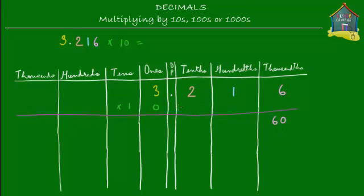Then 1 hundredth times 10 is 10 hundredths, so we put that in the hundredths column. Then 2 tenths times 10 is 20 tenths, so we put that down here. Then we have the decimal point. The last digit is 3 — 3 ones times 10 is 30 ones, so we put that down here.